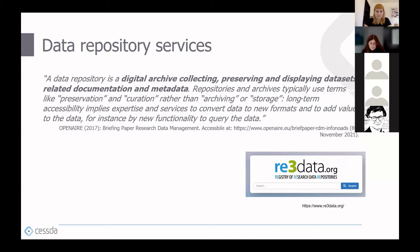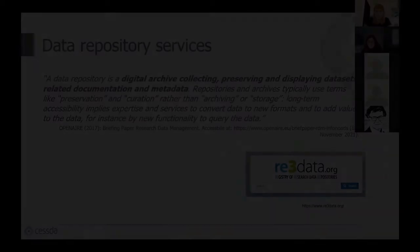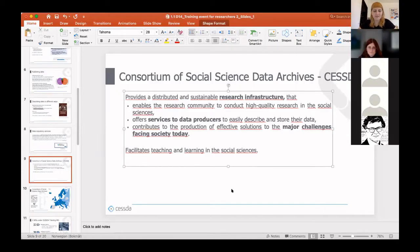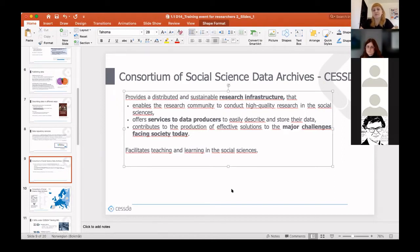I'll pass the word to Sergeja to tell us more about social science data archives available in Europe. One organization that works as a data repository service is the Consortium of Social Science Data Archives—CESSDA. We organizing this event are from CESSDA, or from data archives that work under CESSDA. CESSDA is composed of data archives that offer data repository services and provides a sustainable research infrastructure enabling researchers to conduct high-quality research in social sciences.